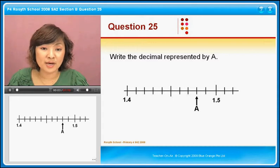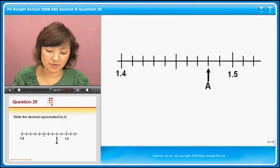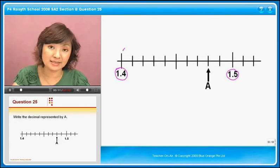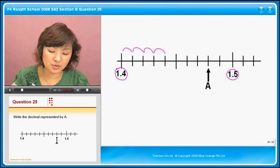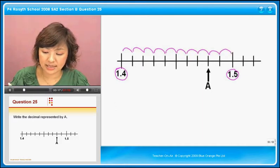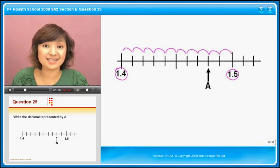Question 25: Write the decimal represented by A. So we have 1.4 here and 1.5 here, and in between, how many intervals are there? 1, 2, 3, 4, 5, 6, 7, 8, 9, 10. There are 10 intervals.